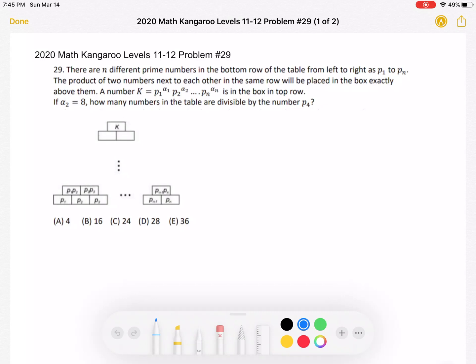There are n different prime numbers in the bottom row of the table from left to right as P1 to Pn. The product of two numbers next to each other in the same row will be placed in the box exactly above them. A number K, which is equal to P1 to alpha 1, P2 to alpha 2, and so on until Pn to alpha n, is in the box in the top row.